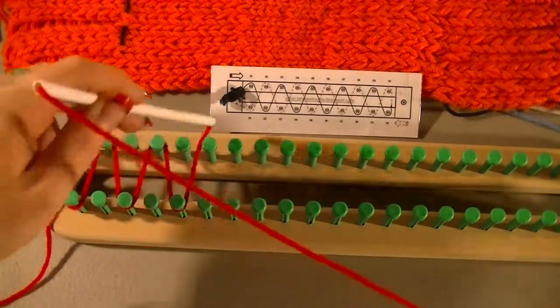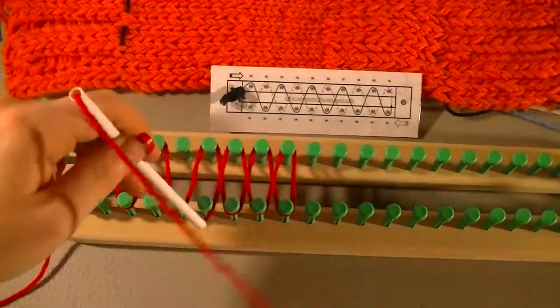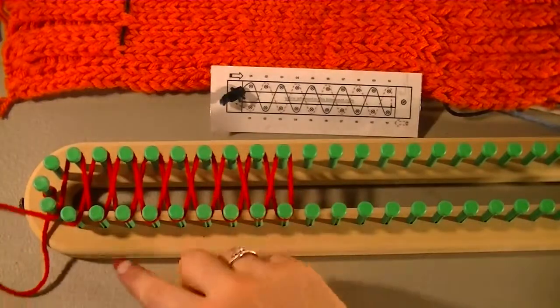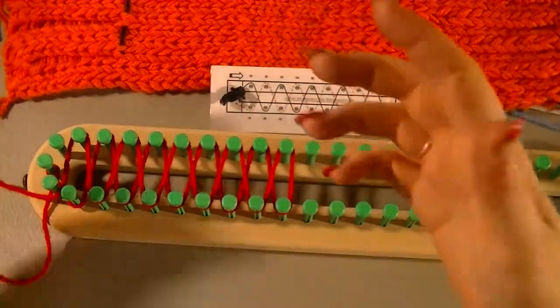Now the stockinette stitch is just done like this and then you pick up your opposite pegs. This is a fun stitch where you can actually run two different colors, so your way down could be one color and your way back could be one color, and then it gives it vertical stripes.